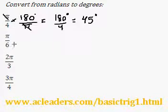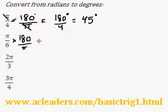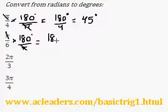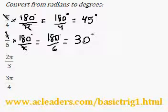So now let's convert pi over 6 into degrees. We multiply by 180 over pi — the pi's cancel out — and we have 180 degrees over 6, which is equivalent to 30 degrees. Hope that makes good sense.